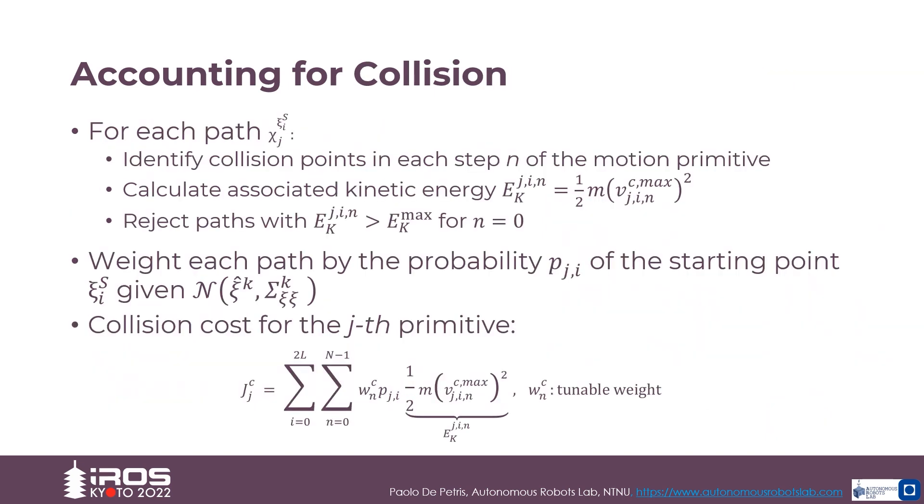At the sample iteration k, and provided the sample set of mean and uncertainty-aware motion primitive sets, the method identifies the instances within each path that it collides with the environment map.